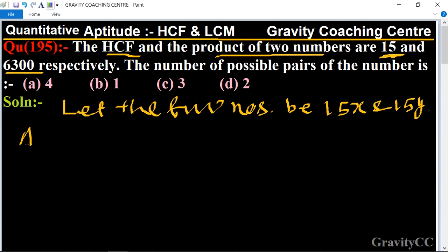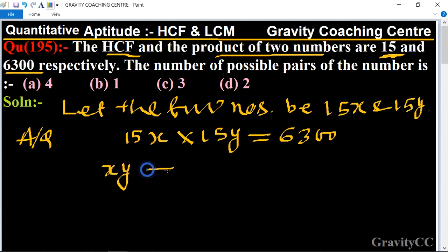According to the question, the product of the two numbers is 6300. So we can write 15x times 15y equals 6300. Therefore, xy equals 6300 divided by 15 times 15.